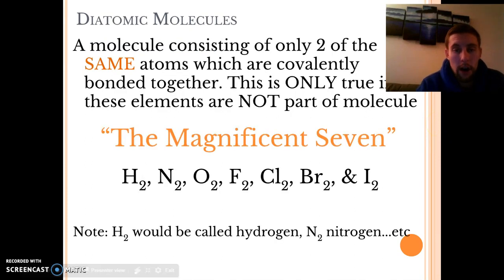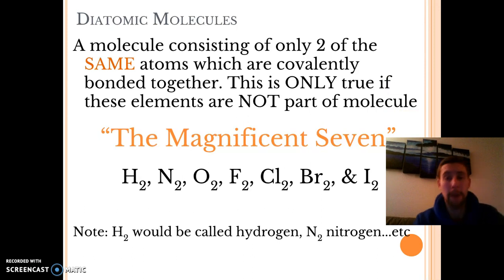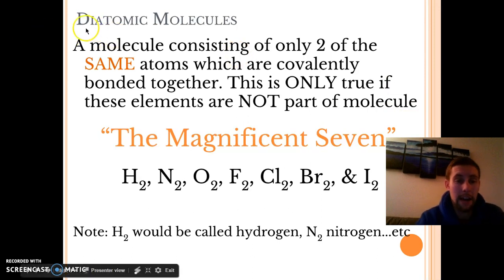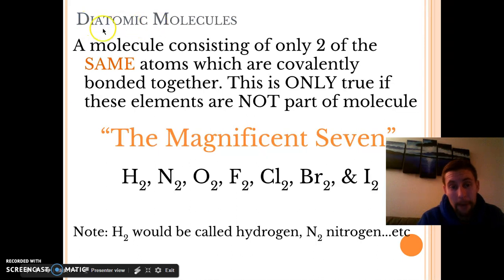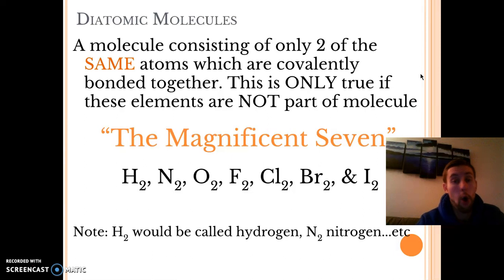What's important to know is that there are things called diatomic molecules. Di, the prefix di, you should be familiar with, that's the prefix meaning two. So two atomic, two atom molecules. The molecule consists of only two of the same atoms which are covalently bonded together. This is only true when they're by themselves, not when they're with any other atoms.